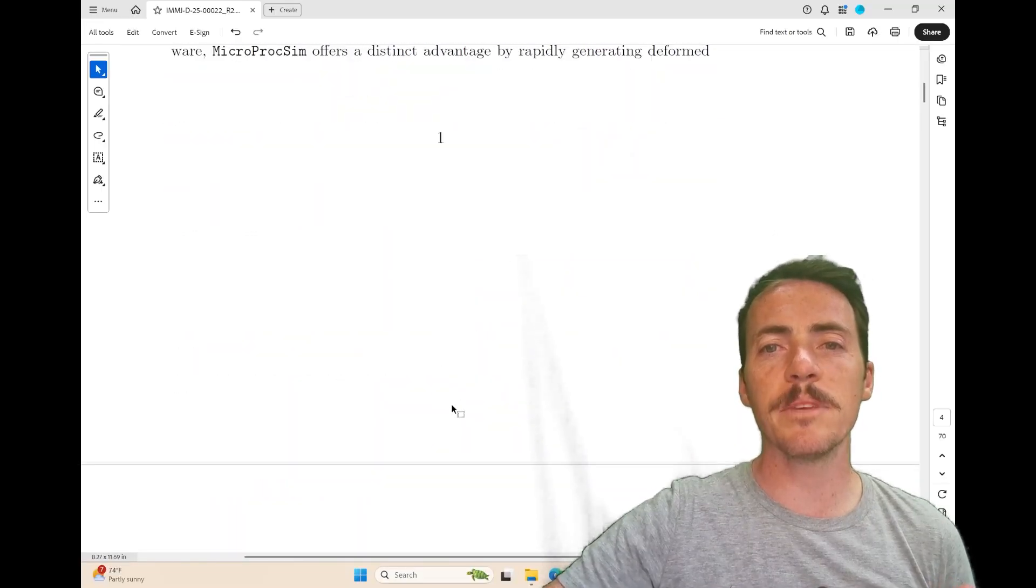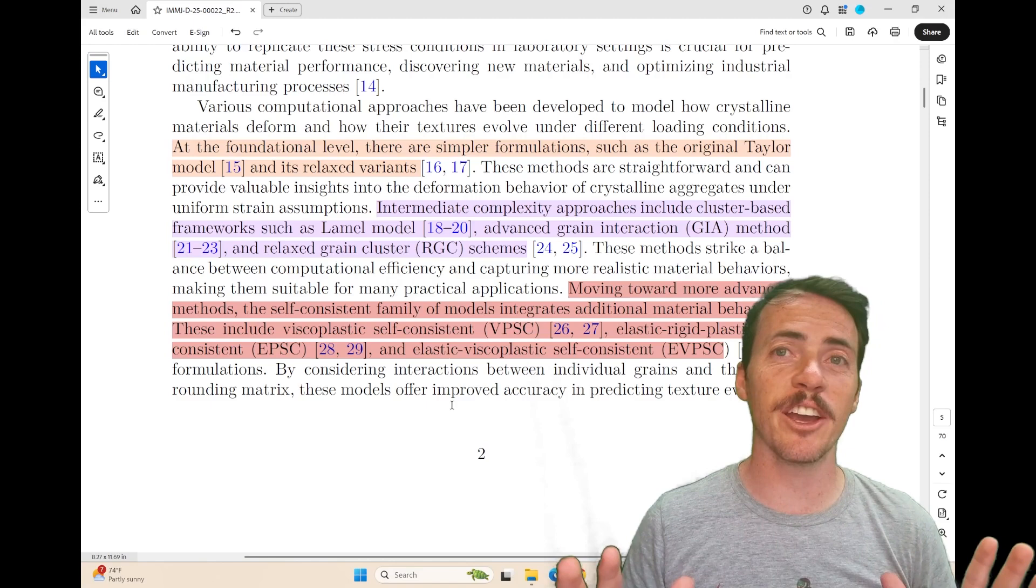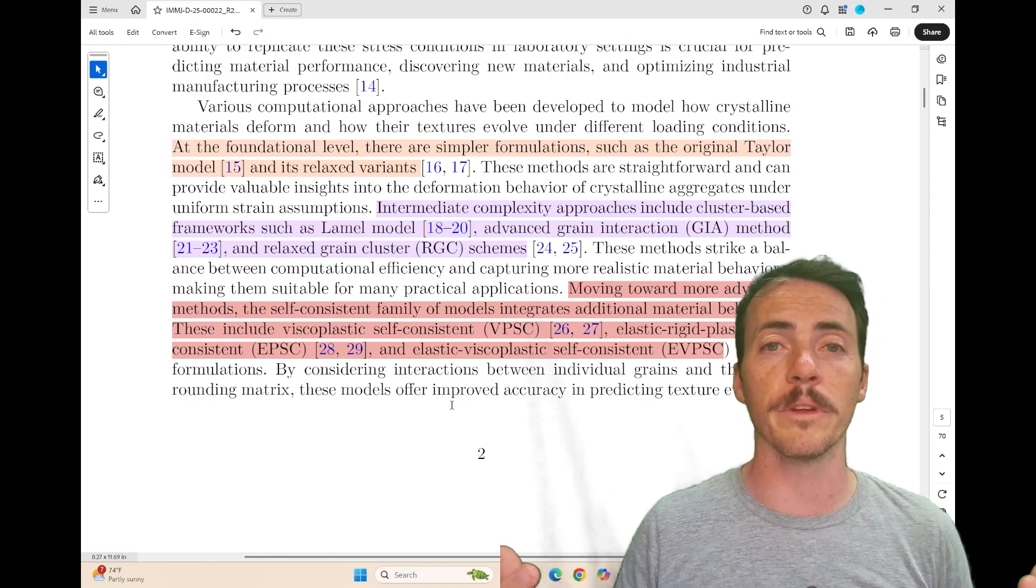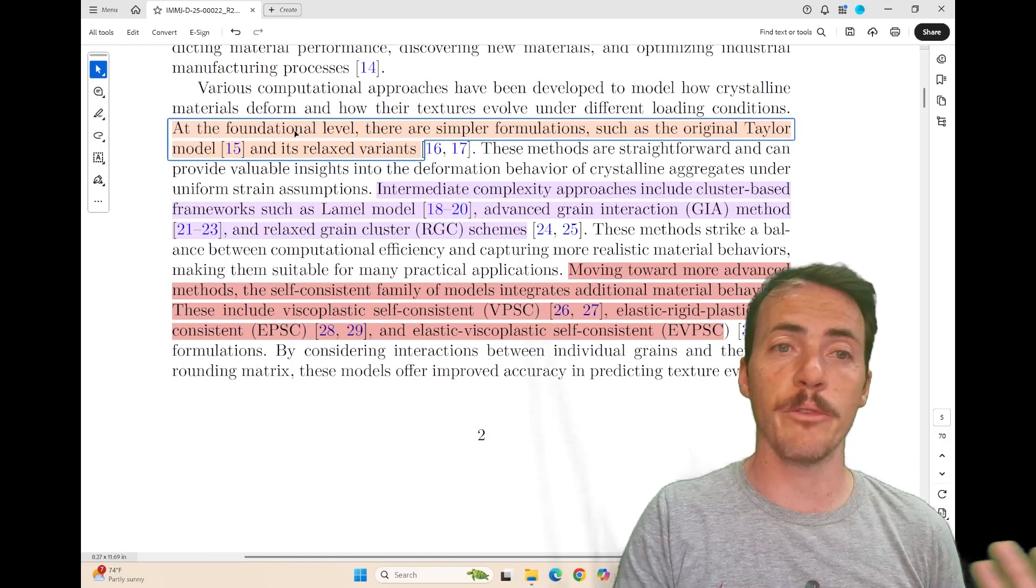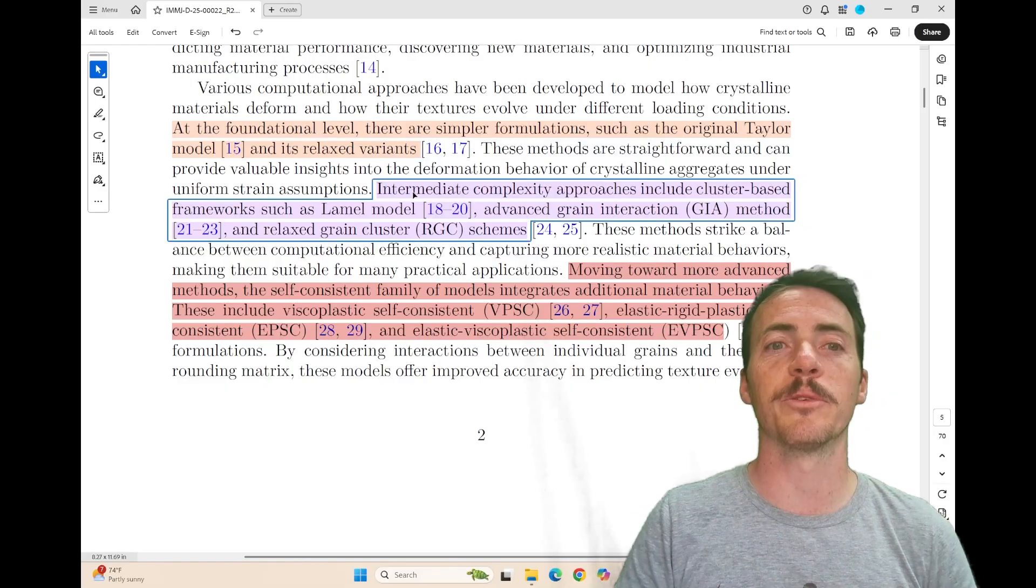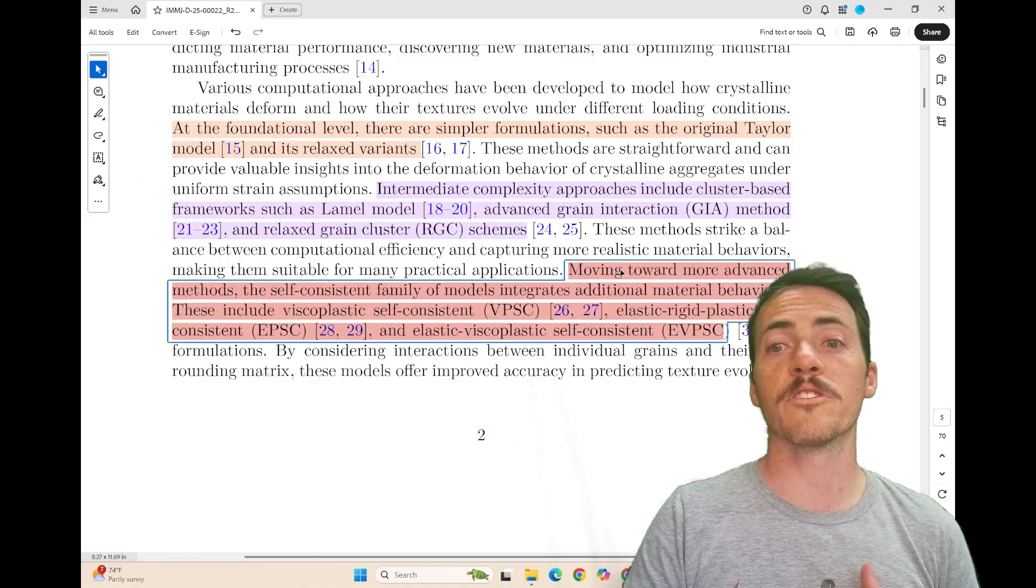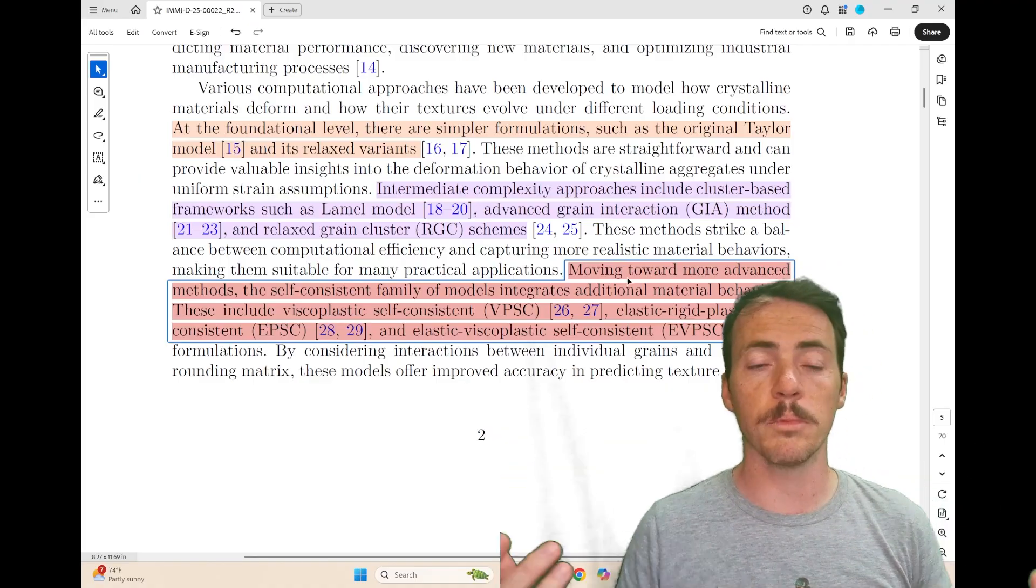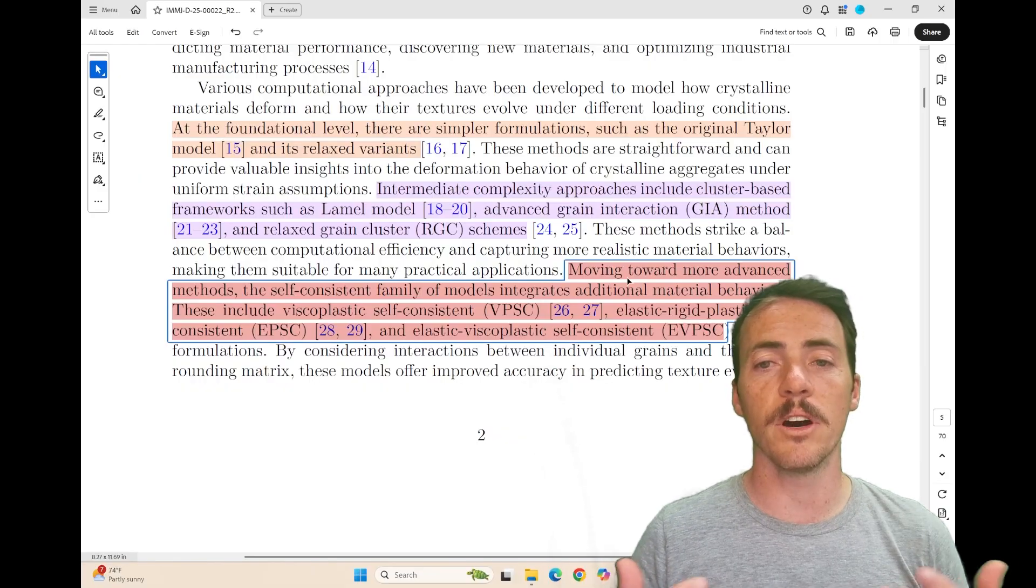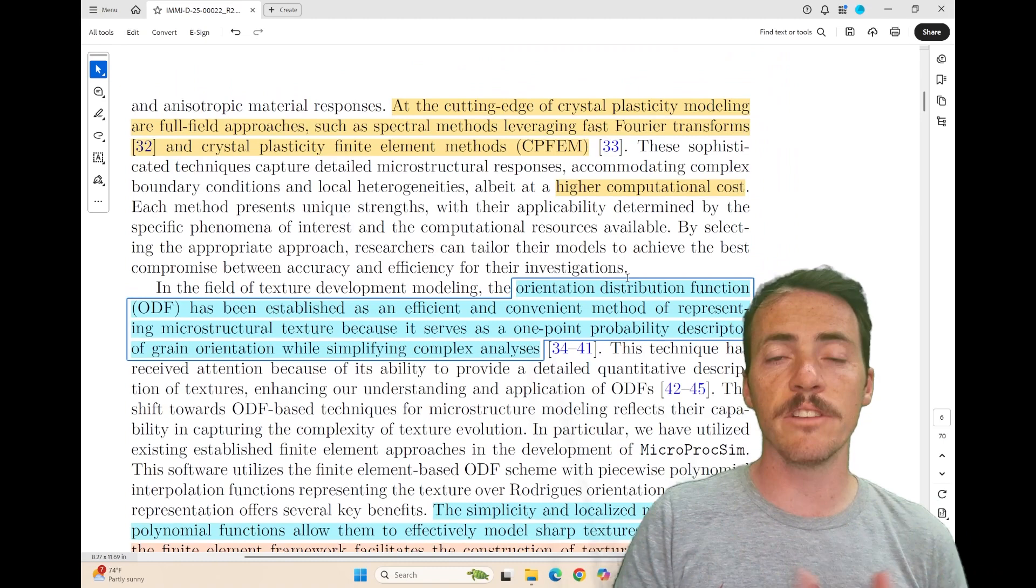Microproxim is a tool for simulating microstructure. The authors start out by pointing out that this is actually a long-studied thing. We obviously care a lot about how microstructure evolves under mechanical deformation because it leads to new properties and performance. There's been a lot of work done here. They talk about the foundational models like the original Taylor model and its variants, the intermediate complexity approaches, lamell, advanced grain interaction, RGC schemes, all the way up to the more sophisticated ones like viscoplastic self-consistent or elastic rigid plastic self-consistent models, all the way up to the state of the art, which would be crystal plasticity finite element models.